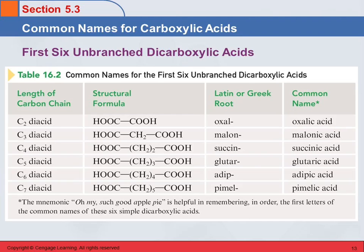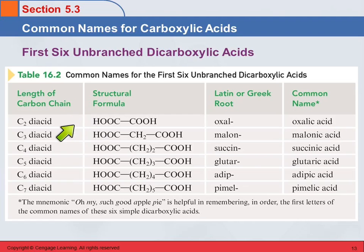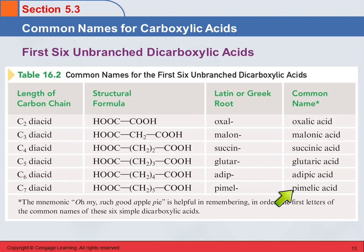For common names of the dicarboxylic acids — I'm not going to hold you to these; I'm not going to make you memorize these, because personally I don't remember them. But oxalic acid — I don't know if you've ever used Barkeeper's Friend — it's a scouring powder very different from Ajax or Comet, and it is predominantly oxalic acid. We also have common names for these diacids: oxalic acid, malonic acid, succinic acid, glutaric acid, adipic acid, and pimelic acid.